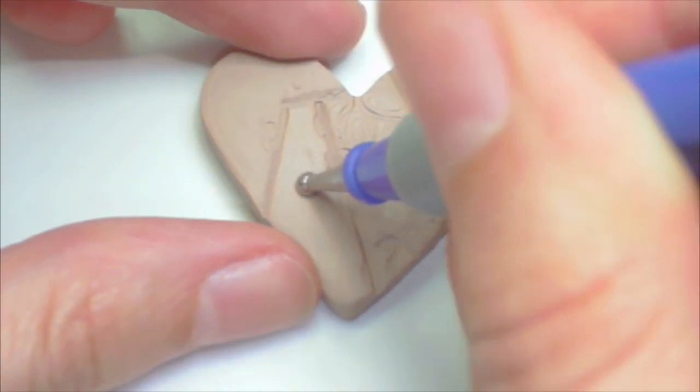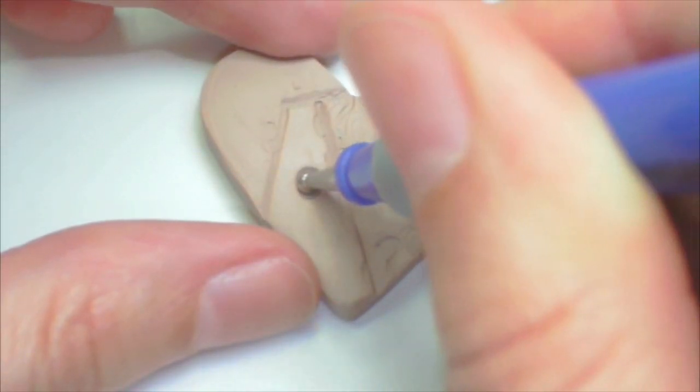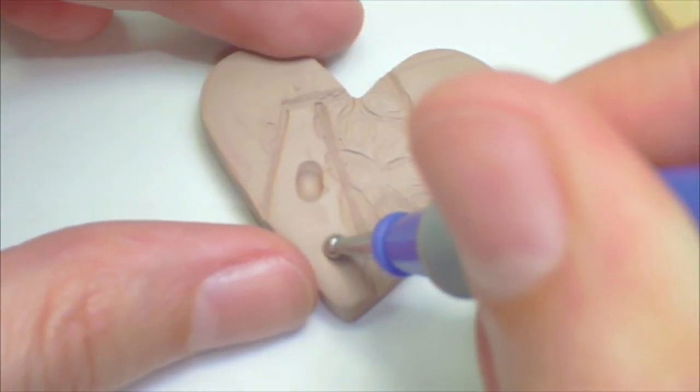To add the circle details, use a dotting tool or something similar. You can make them as big or as small as you want. I like to make them kind of big.